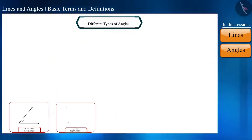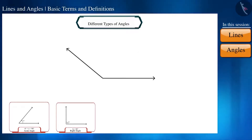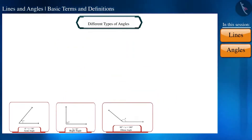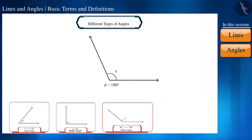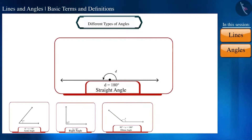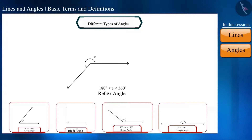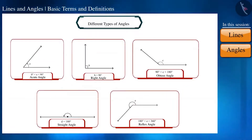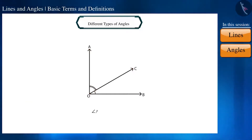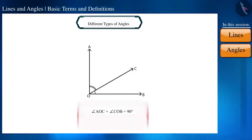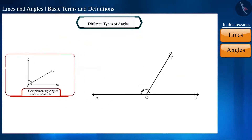If the measure of an angle is more than 90 degrees but less than 180 degrees, it is called an obtuse angle. If it is exactly 180 degrees, it is called a straight angle. If the measure is more than 180 degrees but less than 360 degrees, it is called a reflex angle. If the sum of two angles is 90 degrees, they are called complementary angles. If the sum is 180 degrees, they are called supplementary angles.